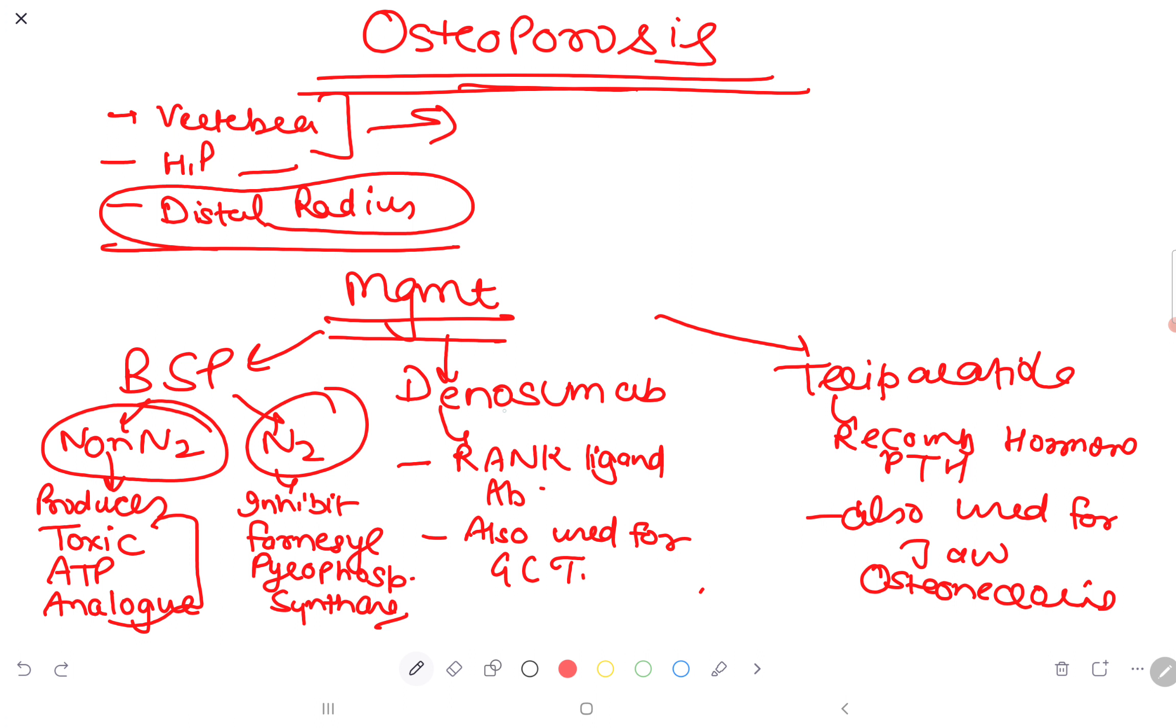Then we also have denosumab. Denosumab is the RANK ligand antibody, like osteoprotegerin (OPG), also used for GCT, that is giant cell tumors.